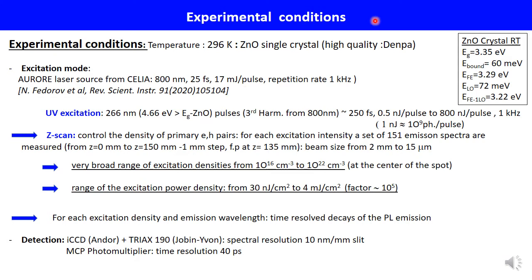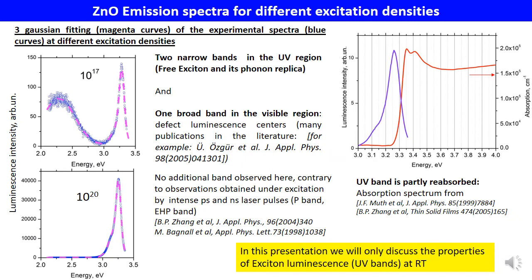Here are the principal known parameters of zinc oxide crystal at room temperature. The band gap is equal to 3.35 eV. The free exciton binding energy is 60 meV, so the free exciton energy is close to 3.29 eV. The optical longitudinal phonon LO energy is 72 meV, giving the free exciton 1-LO phonon replica emission energy at 3.22 eV.